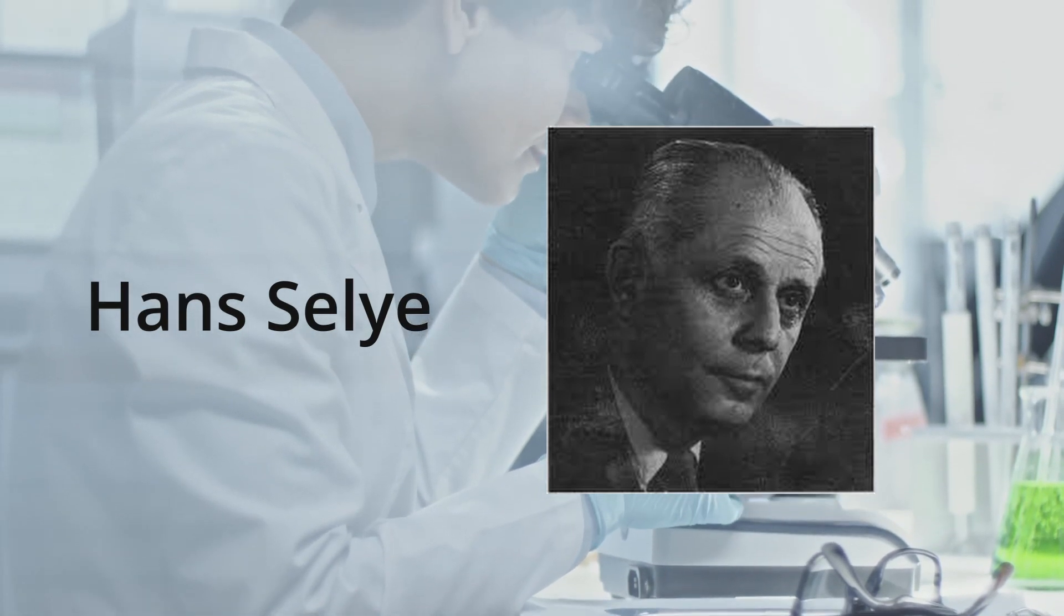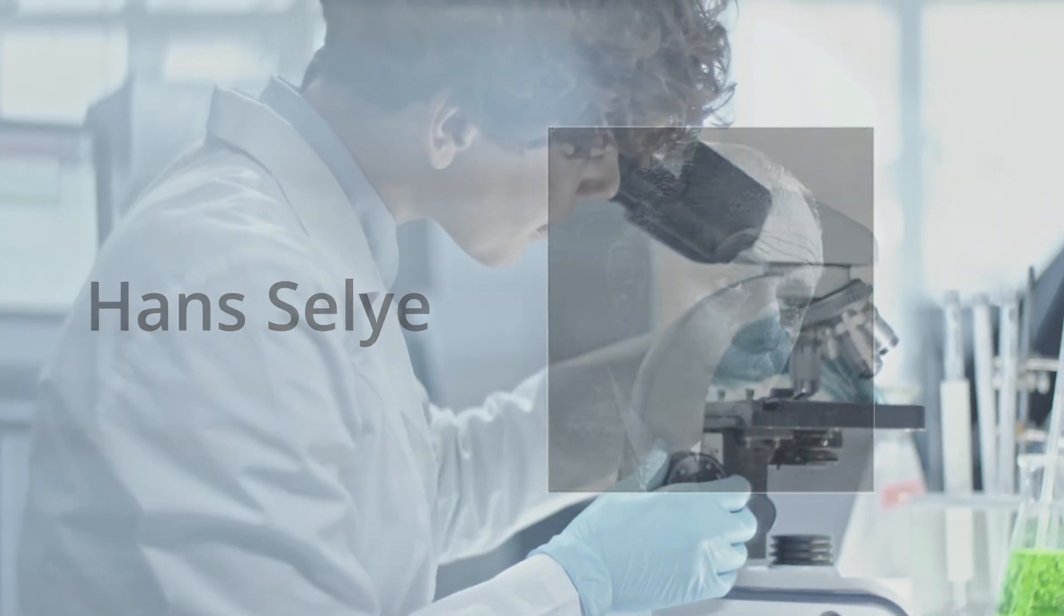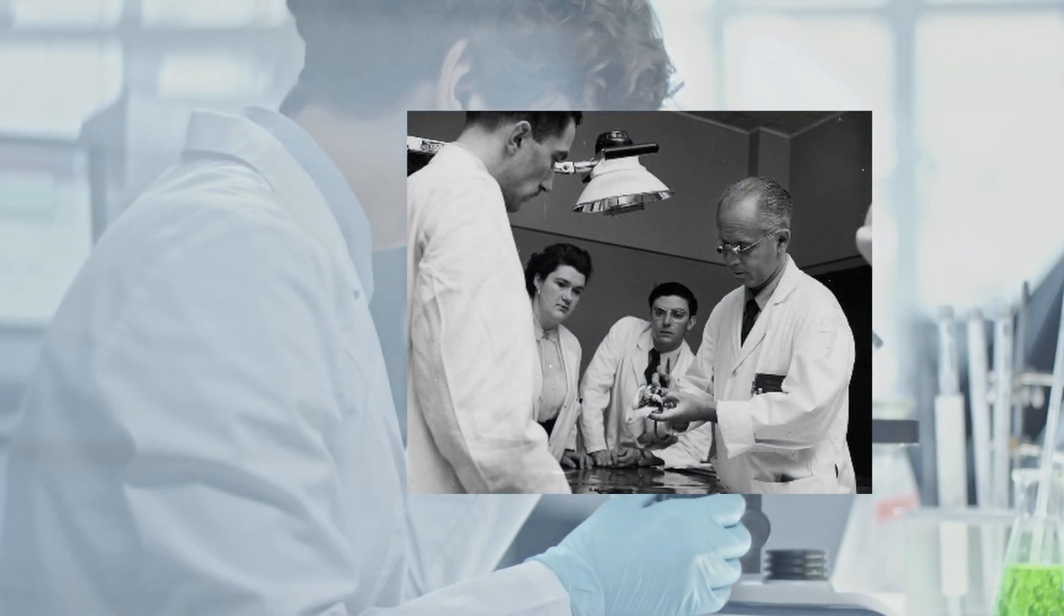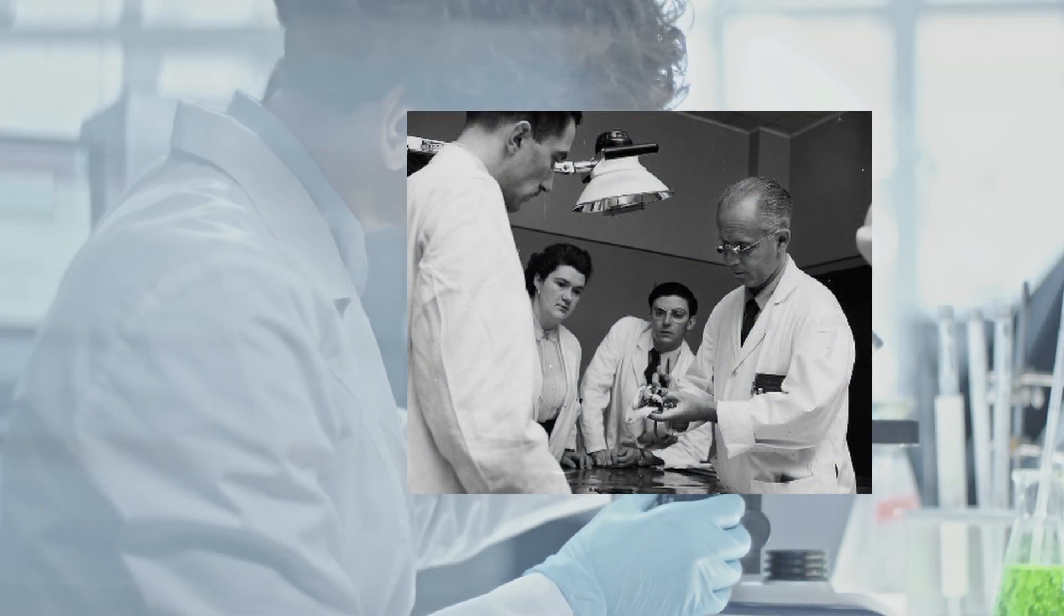Hans Selye was born in Vienna, Austria in 1907 and later immigrated to Canada. He received his medical degree from the German University of Prague and later earned a PhD in organic chemistry from the University of Paris.